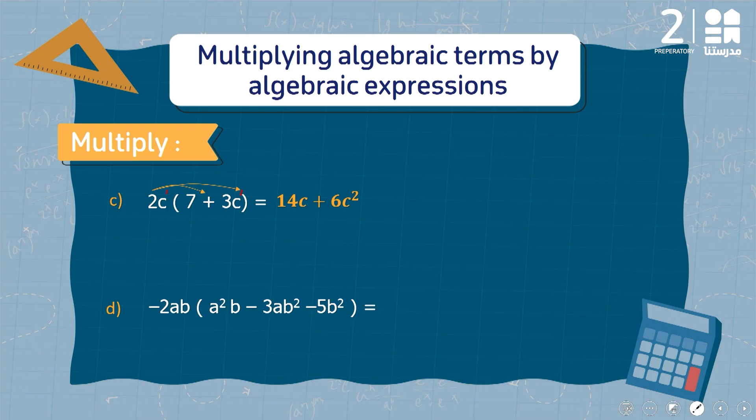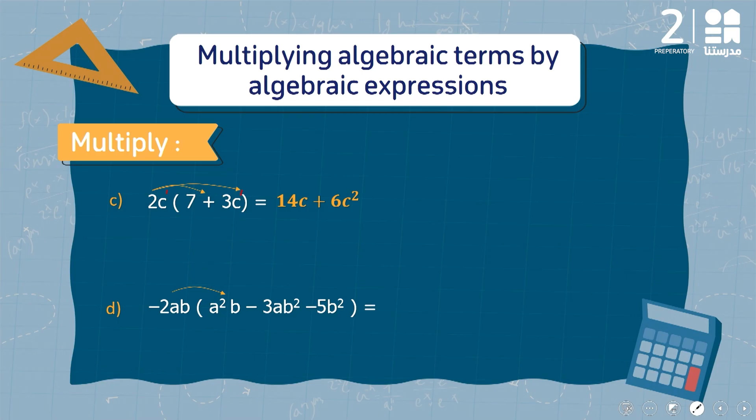In this example, I have inside the bracket three algebraic terms. An algebraic expression is a number of algebraic terms between them with addition and subtraction. We will follow the same plan: distribute the negative 2ab on all the terms inside the bracket.